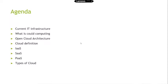Simply, we can say, if we enter into an organization, whatever the things are visible, that we will call it as infrastructure. I can say systems, cables, wires, routers, internet connectivity, server racks, server, data center — all these things we can call them as infrastructure. IT infrastructure is nothing but a collection of hardware, software, switches, and network load balancers.